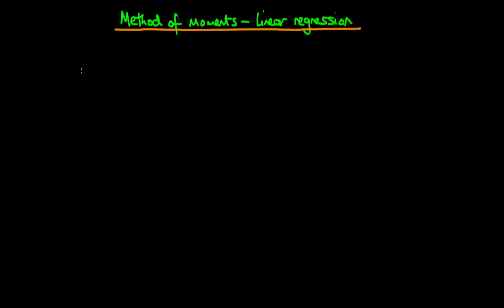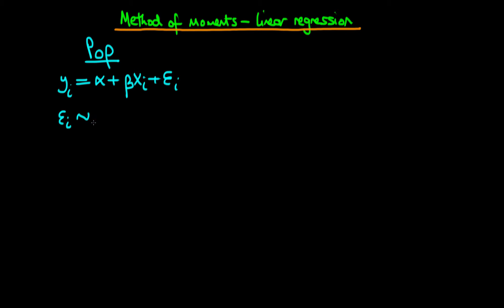In this video I want to talk about how we can use method of moments to help us with generating estimators for the case of linear regression. The example here is where we have a population model: yᵢ equals alpha plus beta times xᵢ plus some error εᵢ, where εᵢ are normally distributed with a mean of zero and a variance of sigma squared. These two statements together generate our population model — a linear bivariate regression model with normally distributed errors.